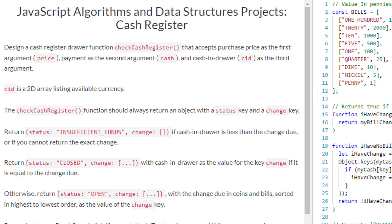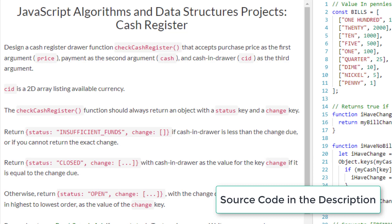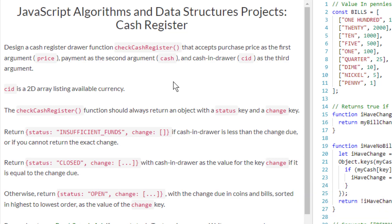Hello and welcome to another JavaScript algorithms and data structures project tutorial. Today we are going to go over the cash register project. This is probably the toughest project out of all the five projects that you need to complete at this time. So let's go ahead and get started.